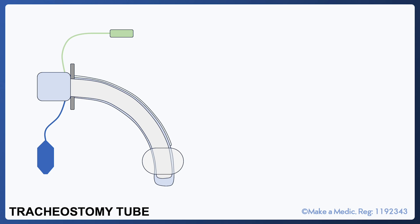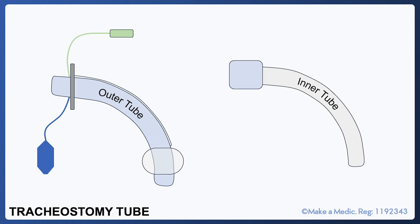One very important point to know about tracheostomy tubes is that they are actually made up of two tubes: an inner and an outer tube. The inner tube can be easily removed whilst keeping the outer tube in place. It's designed this way so that if mucus were to obstruct the lumen, the inner tube can be removed and replaced. Note that the outer tube may have a different external component to the inner tube and may not connect directly to the ventilator without some sort of adapter.